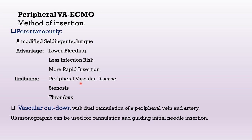Some limitations include the presence of peripheral vascular disease, presence of stenosis, or thrombus. The second type is vascular cutdown, and its advantage is that we can do dual cannulation of the peripheral vein and artery at the same time. Ultrasonography can be used for cannulation and guiding initial needle insertion.